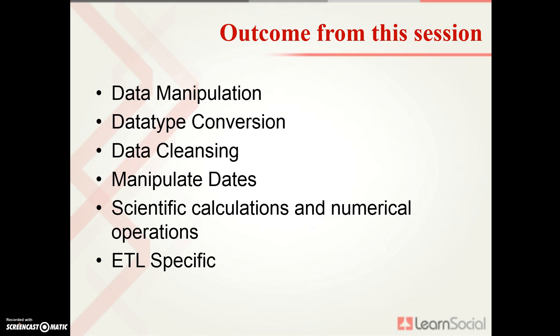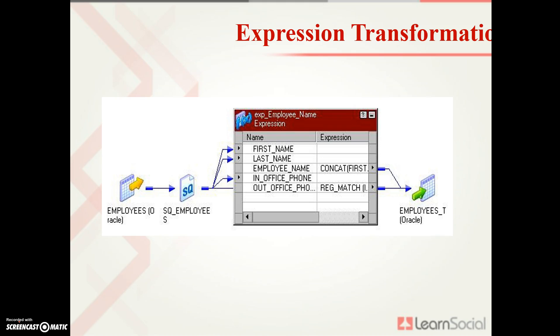We can also apply ETL-specific logic, for example if, lookup, decode, and many more. The expression transformation in Informatica is a connected passive transformation where the number of input and output rows is the same. It lets you modify individual ports of a single row and add or suppress them. It helps implement complicated data transforms, apply business logic, and perform checks and validation — for example, calculating an annual salary, concatenating first name and last name, and many more.